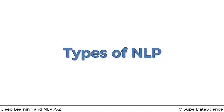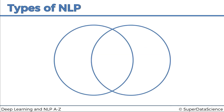Hello and welcome back to the course on deep natural language processing. Today we're going to talk about the types of natural language processing. We've got a Venn diagram with two circles in it, and we are going to look at the different areas of natural language processing that are going to come up in this course.